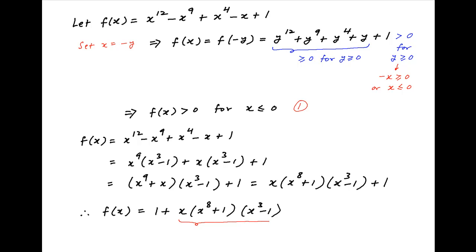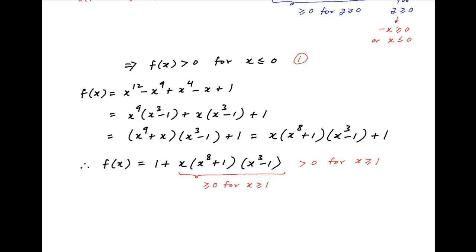Clearly, the second term in this expression is greater than or equal to 0 for x greater than or equal to 1. Therefore, this whole expression is strictly greater than 0 when x is greater than or equal to 1. In other words, f(x) is strictly greater than 0 when x is greater than or equal to 1. Let's call this Result 2.